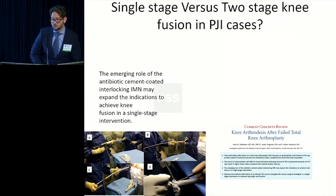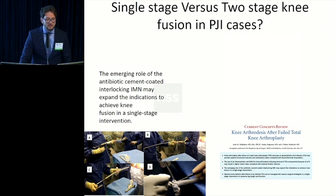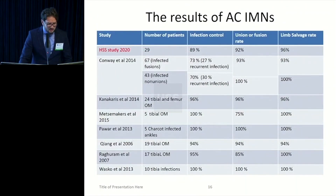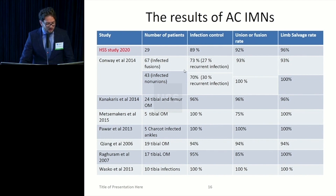Can you do a single-stage versus two-stage knee fusion? In our JBJS article published last year, we discussed the emerging role of antibiotic rods, which allow knee fusion in a single stage. If you know the organism and have a good host, you can place an antibiotic nail to achieve fusion. In our study — currently being submitted — of 29 patients, 14 had knee fusion after infected TKA. Infection control was 89%, and the literature ranges from 70% to 100% depending on how infection control is defined.